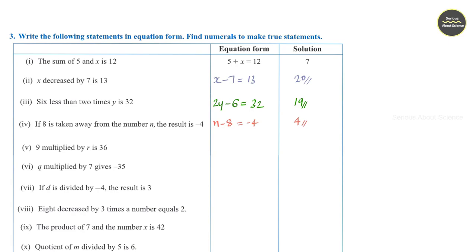Question number 5: 9 multiplied by r is 36, that means 9 times r is equal to 36. Dividing both sides by 9, r is equal to 4. Question number 6: q multiplied by 7 gives minus 35, so 7 times q is equal to minus 35. Dividing both sides by 7, q is equal to minus 5.